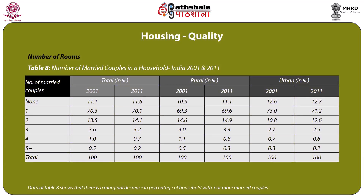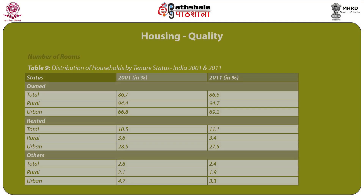Table 8 covers number of married couples in a household for 2001 and 2011. The categories are none, 1, 2, 3, 4, and 5 and above. In total, households with 2 married couples changed from 13.5 percent in 2001 to 14.1 percent in 2011, while households with 3 married couples reduced from 3.6 to 3.2. Overall, Table 8 shows a marginal decrease in percentage of households with 3 or more married couples.